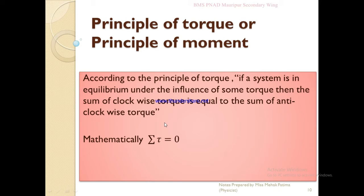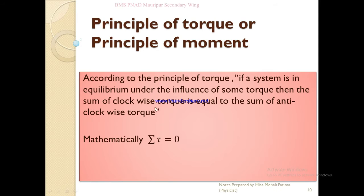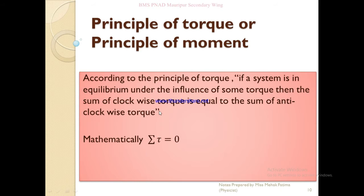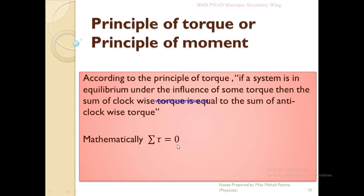Now the Principle of Torque: according to this principle, if a system is in equilibrium under the influence of some torques, then the sum of clockwise torques is equal to the sum of anticlockwise torques. Since clockwise and anticlockwise torques are in opposite directions, every action is opposite, and when summed they give zero.